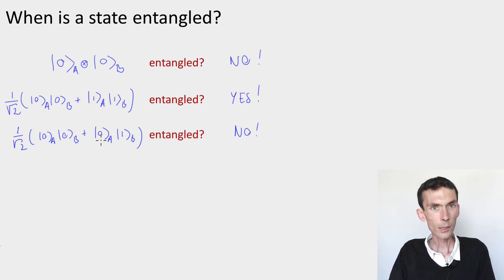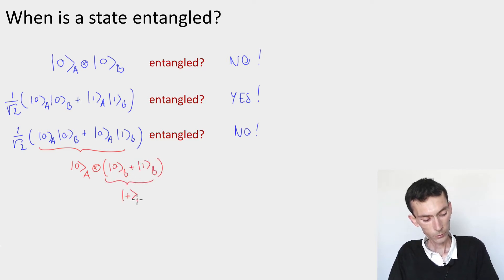The reason it's not an entangled state, it's actually a product state, is that it factors. You can rewrite this as simply 0 for A, tensored 0 plus 1 for B, which is just the plus state. And that's not an entangled state.